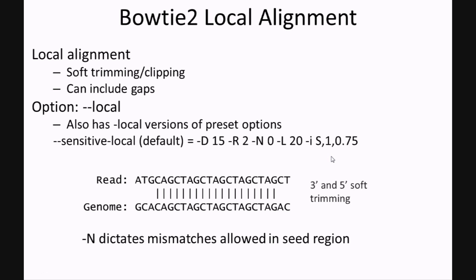Again, there are predetermined parameter settings that you can choose from that are specific to local alignment. Those would be very fast, fast, sensitive, and very sensitive. The default is sensitive local, and the parameters are shown here, where capital N dictates how many mismatches are allowed in the seed region.